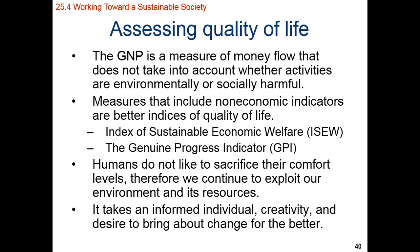If we look at GNP — Gross National Product — as a measure of money flow, it doesn't take into account whether activities are environmentally or socially harmful. GNP just looks at how much money goes in and how much goes out, so it's not a good way of assessing quality of life. A much better way would be to include non-money-based indicators such as the index of sustainable welfare or the genuine progress indicator, which take into account both economic and the harder-to-quantify environmental and psychological effects.